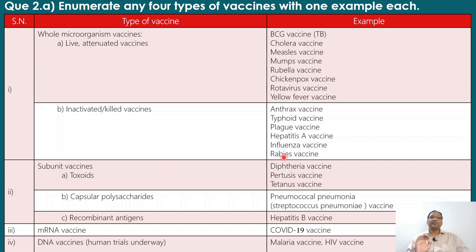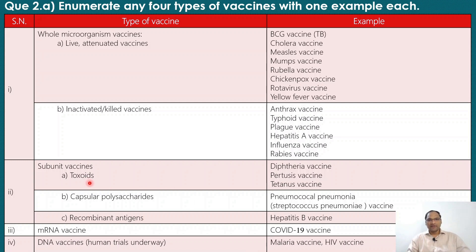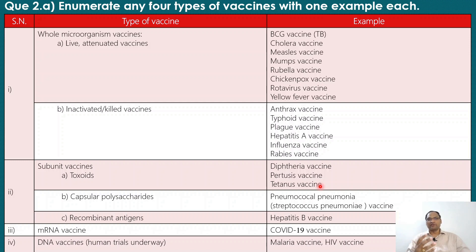The second type of vaccine is the subunit vaccine, also called the purified macromolecule vaccine. In this type, not a complete organism but only a part of the microorganism is used. The first subtype uses toxoids — some bacteria release toxins that cause pathological disease. These toxins are inactivated and converted to toxoids. Examples of toxoid vaccines include the DPT vaccine: diphtheria, pertussis, and tetanus.